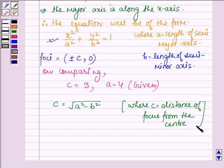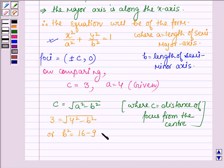Now let us substitute the value of c and a to get the value of b. We have 3 = √(4² - b²), or b² = 16 - 9, which equals 7.